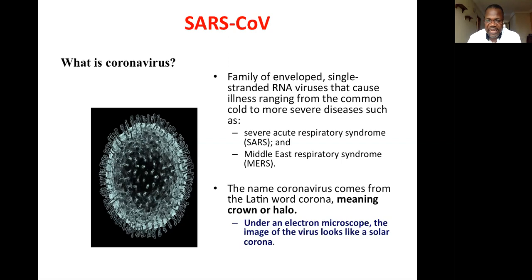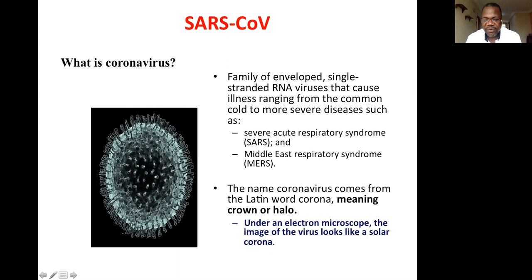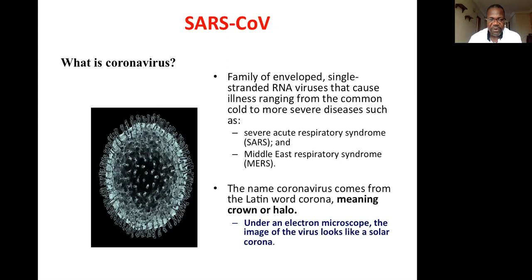The name coronavirus comes from the Latin word corona, meaning crown. You can see here the structure of the virus — it's a corona, a crown, a halo. Under an electron microscope, the image of the virus looks like a solar corona, which is what you can see here.